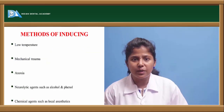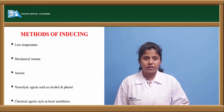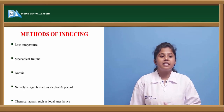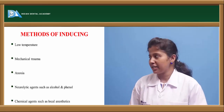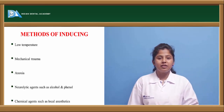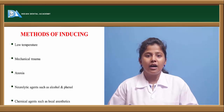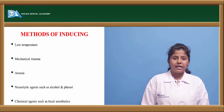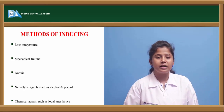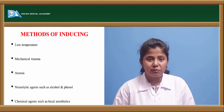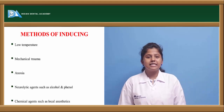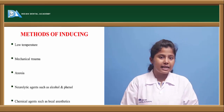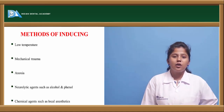Local anesthesia can be induced by various methods. One method is low temperature — if we apply low temperature or chilled engulfment to a particular area, it becomes numb and loses sensation. Another method is mechanical trauma — by giving external mechanical injury, numbness is induced. Another is anoxia, a condition where oxygen supply is decreased, causing loss of sensation. Neurolytic agents like alcohol and phenol also cause loss of sensation. Finally, chemical agents called local anesthetics can be used.